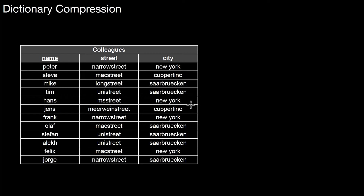So what can we do about that? The interesting question is how would the database system store those values — those individual values? Is it the case that every time a value is stored, the value is stored again? So every time the database wants to store Saarbrücken, it stores the characters representing Saarbrücken. Well, some database systems actually do it like that. Therefore, you have to intervene. A very efficient technique to fix that is called dictionary compression.